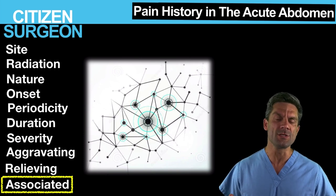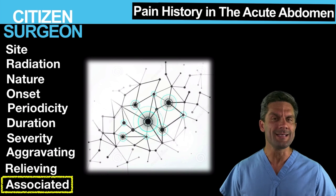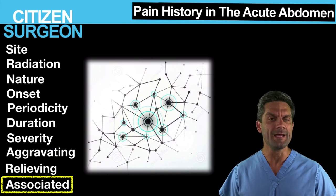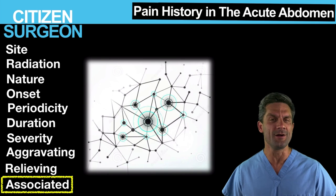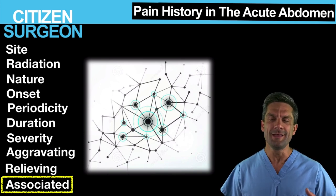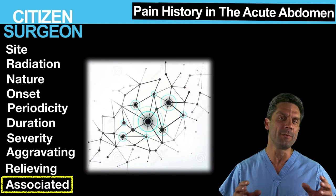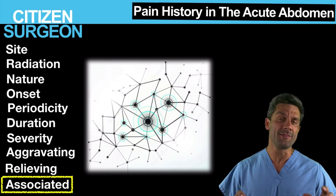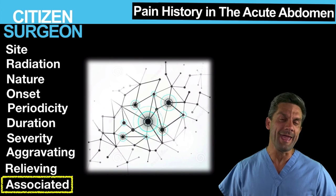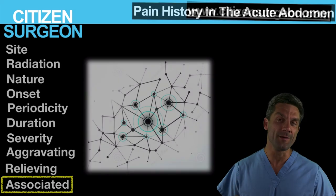So that's all ten of them: SRNOPD SARA — site, radiation, nature, onset, periodicity, duration, severity, aggravating, relieving, associated. By the end of that, you're going to have a nice bullet to deliver to your attending and a solid HPI. When you put it all together, you'll have a good idea of where everything is coming from.